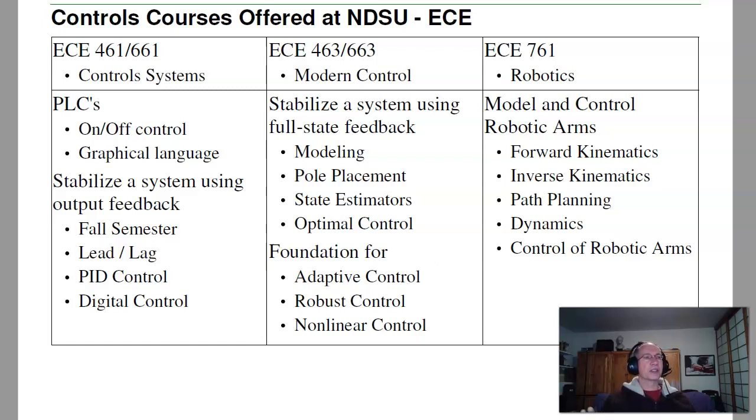This class, 463 Modern Control, is offered spring semester. Here we're looking at stabilizing systems using full state feedback. That includes modeling dynamic systems, both linear and nonlinear, pole placement, placing the poles of the closed loop system, state estimators, and optimal control. It's also the foundation for many courses that follow: adaptive control, robust control, nonlinear control, to name a few.